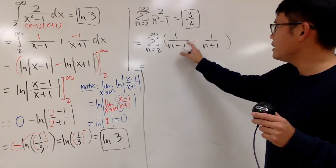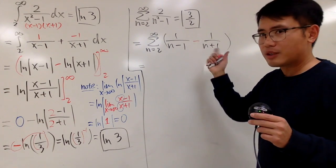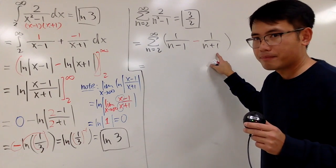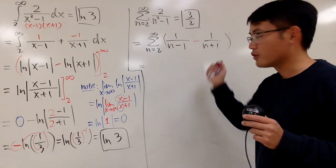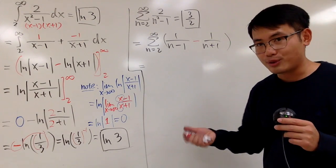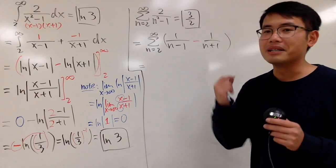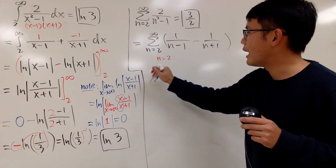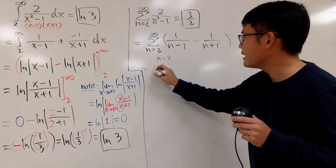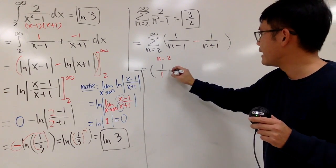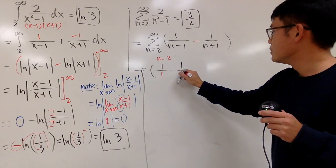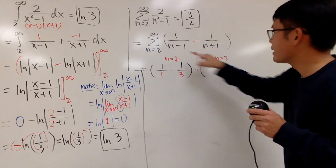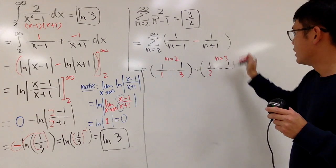When you see two expressions that are the same kind but just off by several terms — here you have n - 1 on the bottom, and here you have n + 1 — they are off by 2. In these situations you follow the terms to see if this converges. Starting value is n = 2. The first term is 1/(2-1) - 1/(2+1), which gives 1/1 - 1/3. Next, plug in n = 3: you get 1/2 - 1/4.